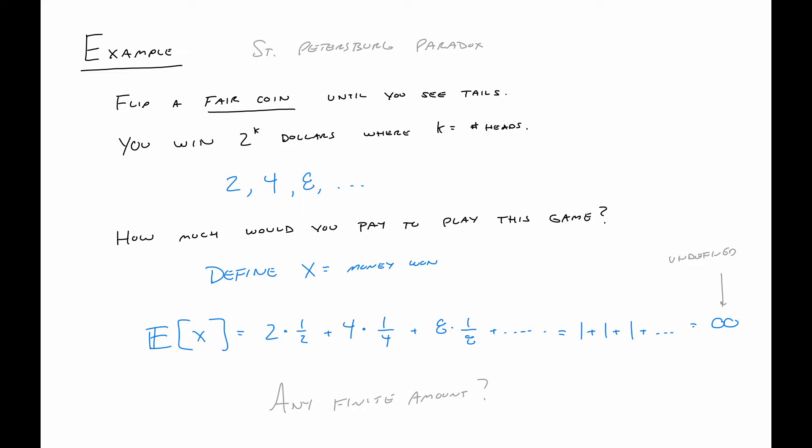When this happens we say the expectation is undefined. Pretty much everything else we do assumes we're not in one of these cases. Another canonical example is the Cauchy distribution — if there's ever a rule or theorem in statistics, the Cauchy distribution inevitably breaks it. One oddity of the Cauchy is that it has a median since it's symmetric about zero, but its mean is undefined. You'll investigate this a little bit in homework.